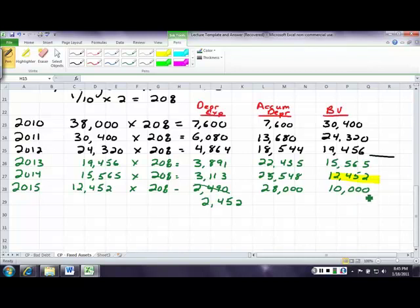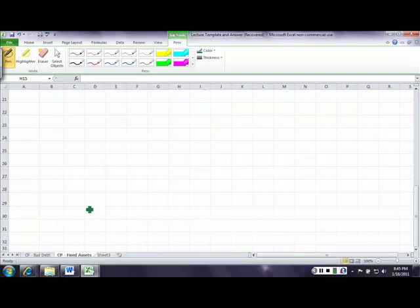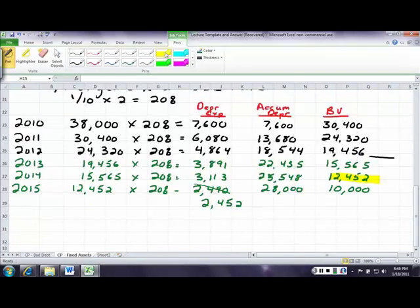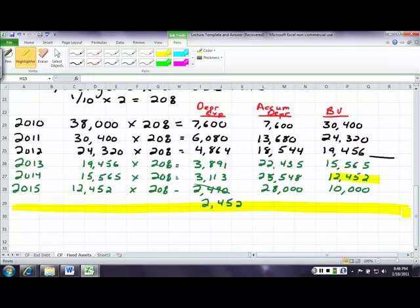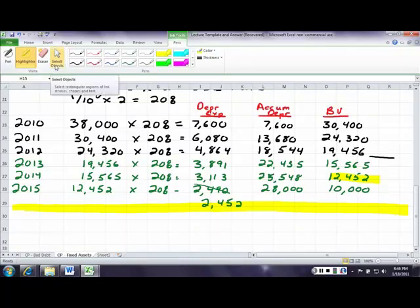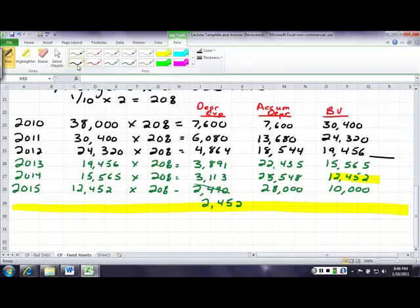That's how salvage value comes into play on a double declining balance. Next, for part B, we kind of reinvented the wheel and said, wait a minute, I want you guys to stop a minute. Let's assume that we're going to do straight line, and then after three years, changed our mind. Remember, straight line was $28,000.